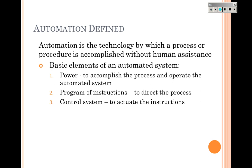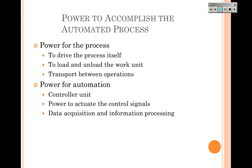The basic elements of an automated system include three things. First is power — that's the power to accomplish the process and operate the automated system. Second is a program of instructions to direct the process, which is what you would put into the controller. Third is the control system that actuates those instructions.